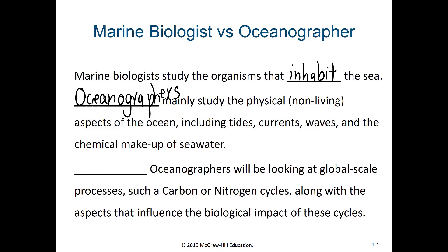There's an aspect of oceanography known as biological oceanography. This differs slightly from marine biology in that a biological oceanographer looks at global scale processes such as the carbon cycle or nitrogen cycle of the planet and how marine organisms are impacting these cycles on a global scale, as well as what aspects from the rest of the world impact marine organism growth and development. Biological oceanography is not the emphasis of this course — this is a marine biology course, so we'll primarily be talking about the diversity of animals within the oceans and how they interact in marine ecosystems and habitats.